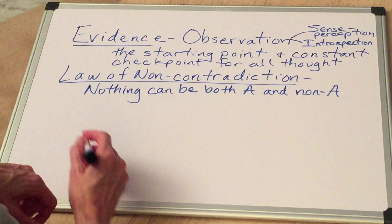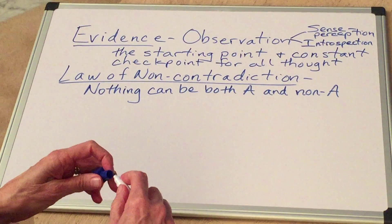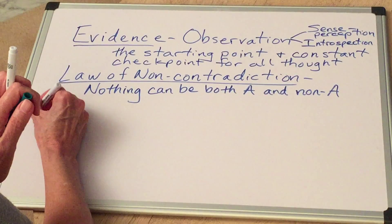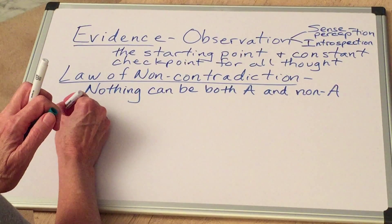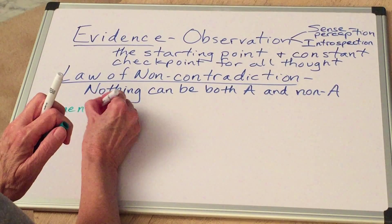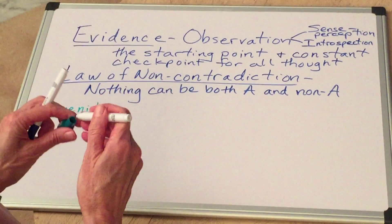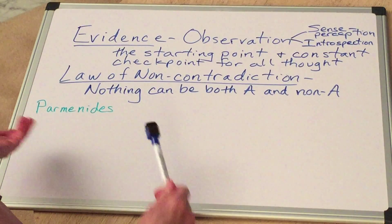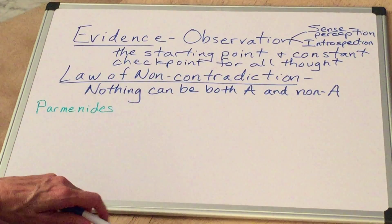But if we look at history, somebody named Parmenides, way back before Aristotle in ancient Greece, he stopped here. This was his complete idea of the law of non-contradiction. And this actually, as it's stated, is not true. There are exceptions to it and many, many exceptions.